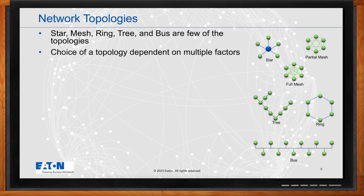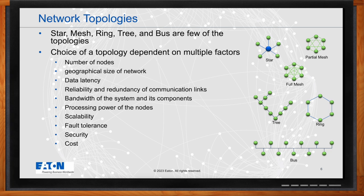The selection of an appropriate IoT network topology depends on factors such as size of deployment, type of devices and sensors, communication requirements, scalability, fault tolerance, and overall system architecture. Different topologies — star, mesh, tree, ring, or hybrid — offer different trade-offs. In a star topology, all nodes connect to a central hub, simplifying management but introducing a single point of failure. In a mesh topology, each node connects to multiple others, offering redundancy but requiring more complex routing.